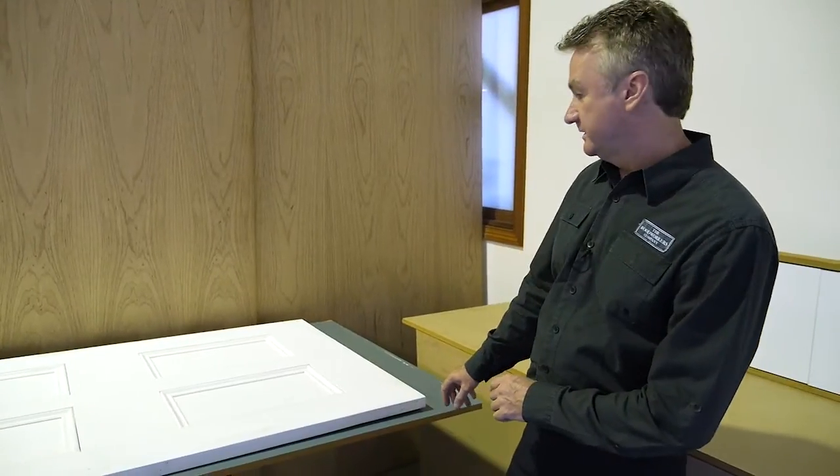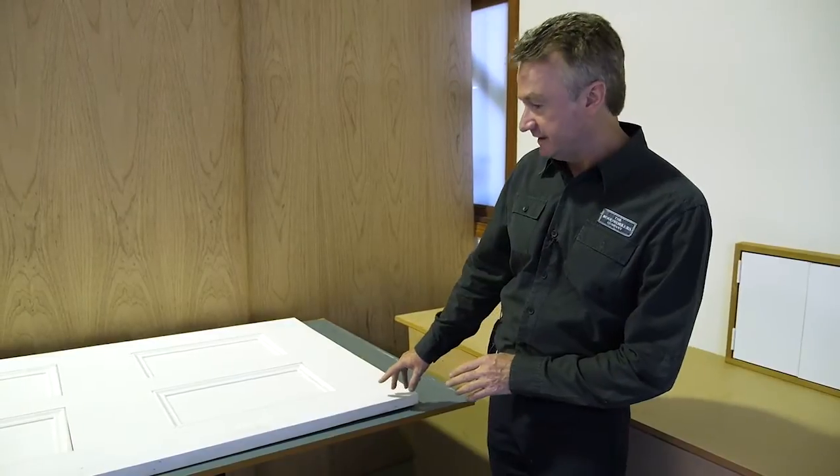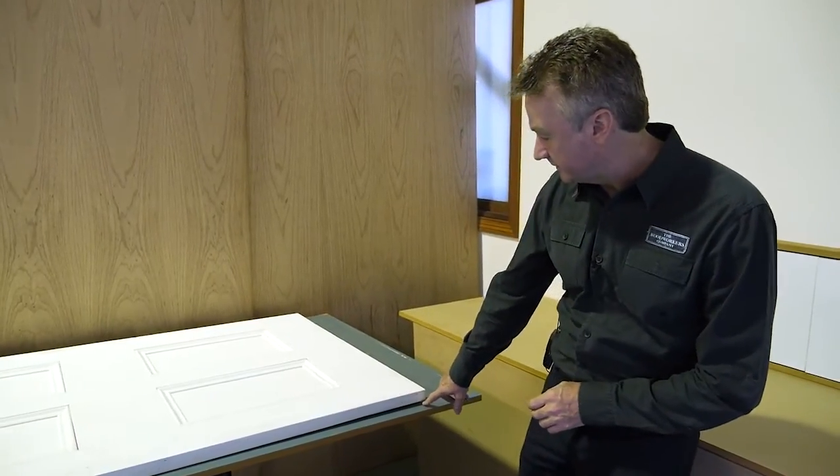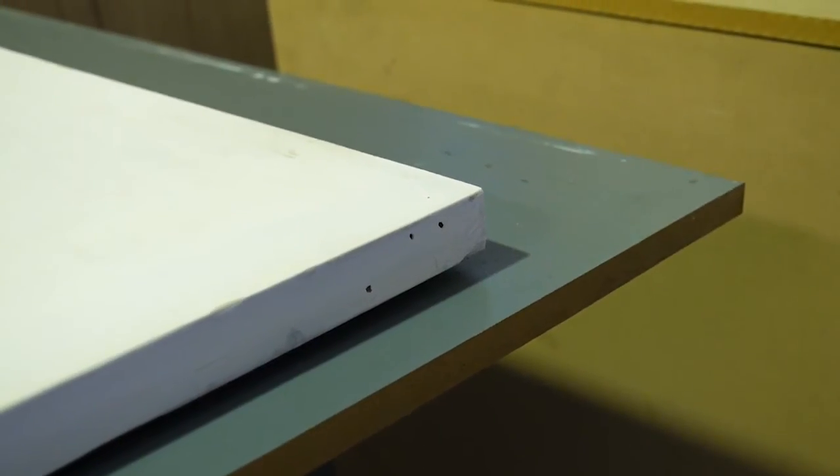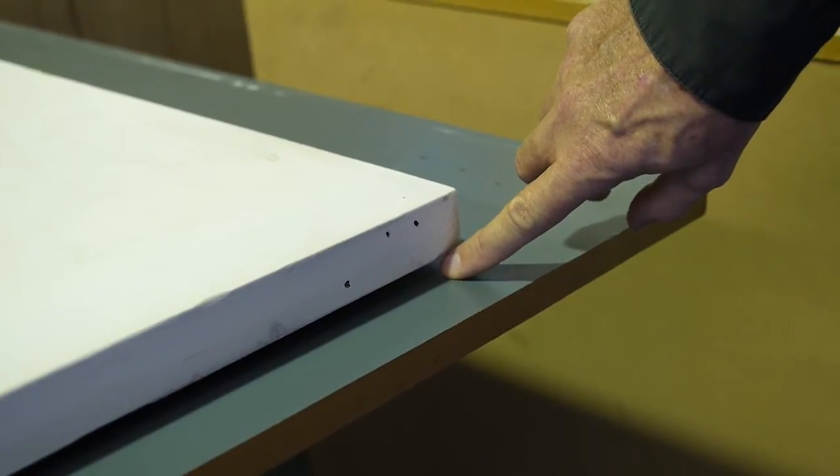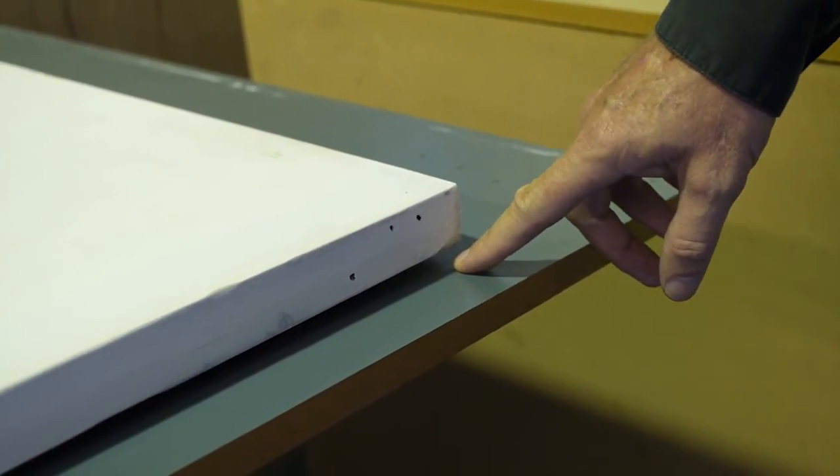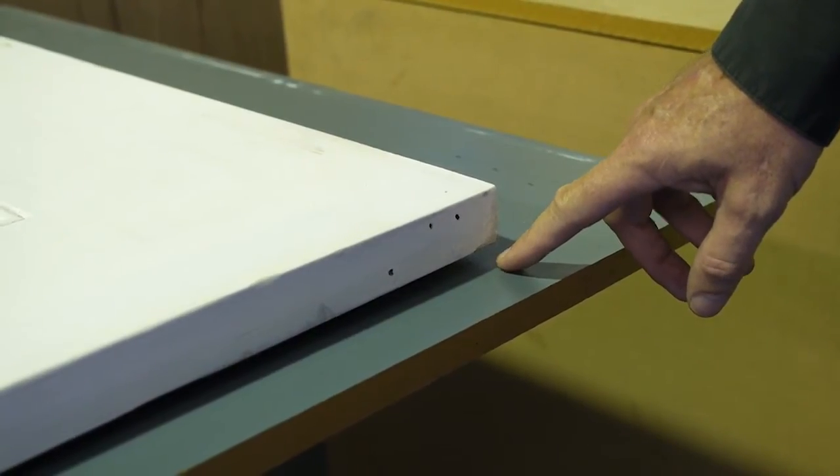What we've got here is the worst door that we could find which actually does have a warp. We've laid the door down on a flat surface and if you look down here at the very end, you can see what constitutes a warp. The Australian standard allows for a 5mm warp in a 2040x820mm standard door before it's considered a defect. As the door size increases, the allowable warp also increases proportionally.